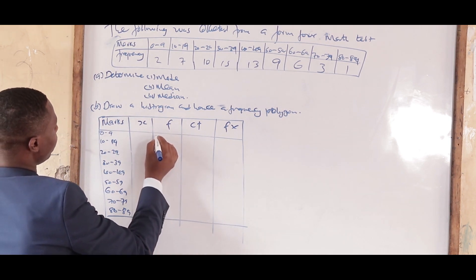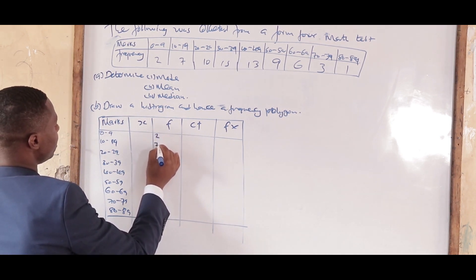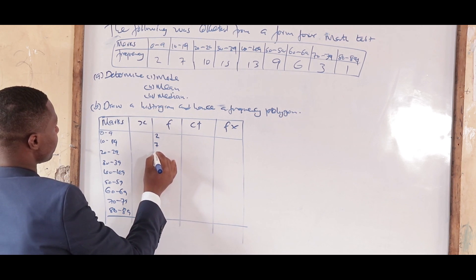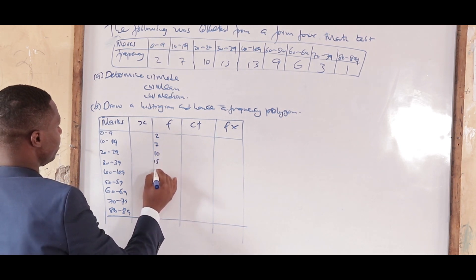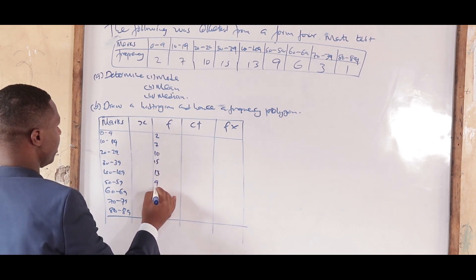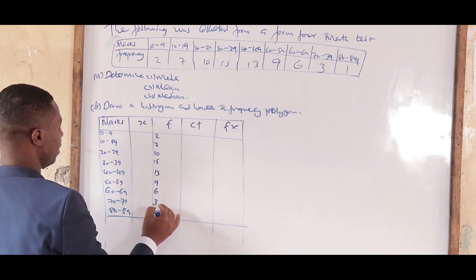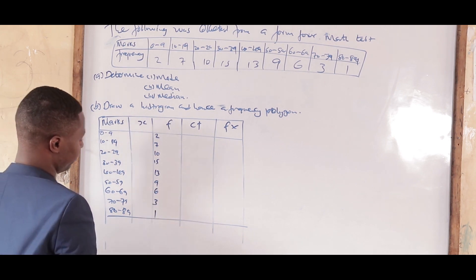The frequencies for each class interval are: 2, 7, 10, 15, 18, 9, 6, 3, and 1.